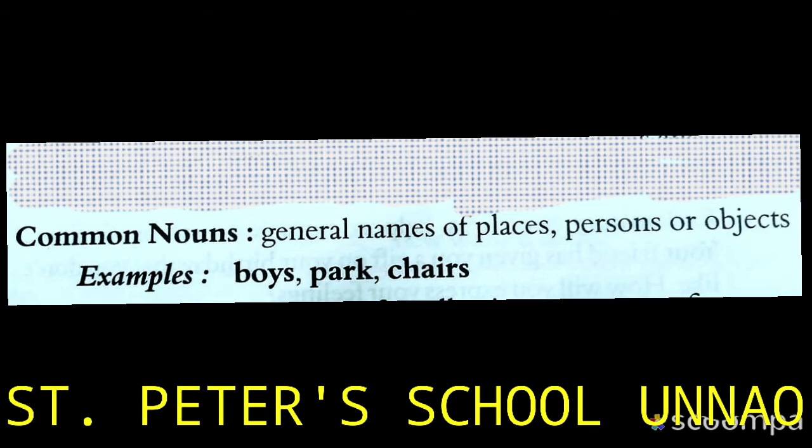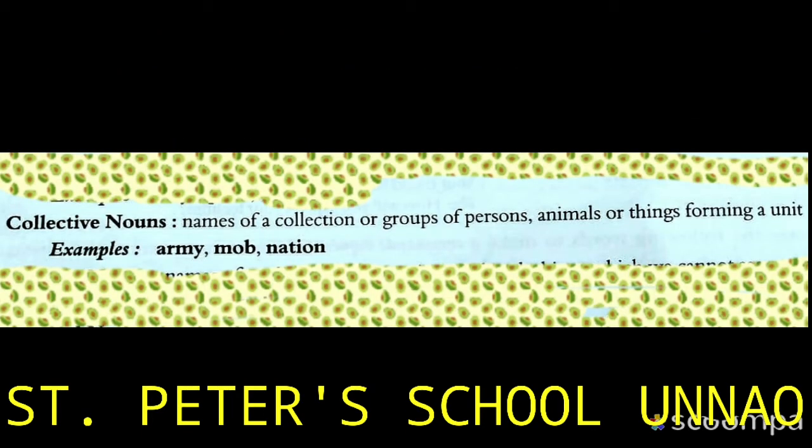The third kind is collective noun. Collective noun refers to names of a collection or group of persons, animals, and things forming a unit. When many things come together and form one unit, that is called a collective noun.